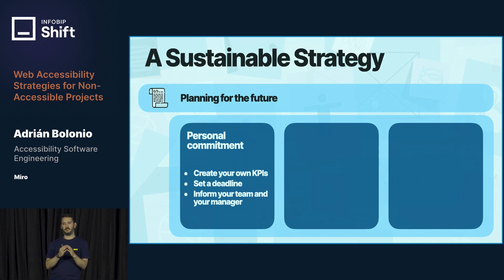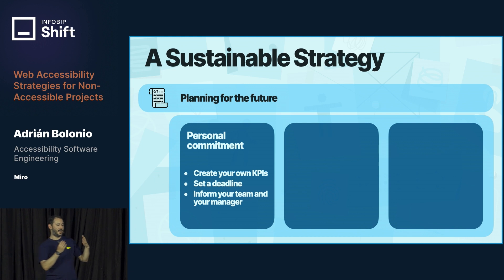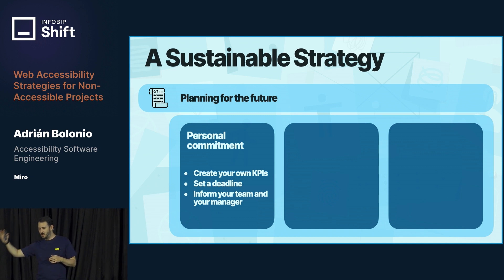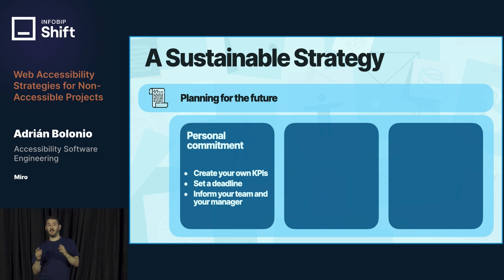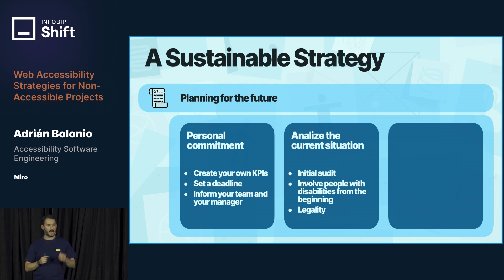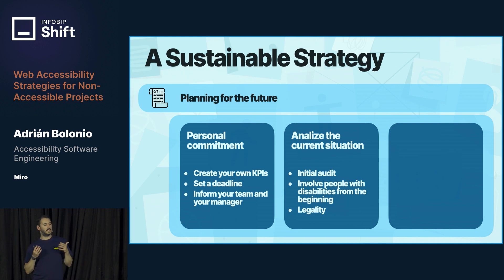Planning for the future starts with personal commitment. You want to be the accessibility expert of your project, so make a personal commitment. Create your own KPIs and set deadlines: by the end of the quarter, I will be able to fix easy accessibility issues; I want to finish this course. And importantly, be transparent — inform your team and your manager that you want to take the lead in accessibility. Also analyze where you are now. The current situation can start with an initial audit — it doesn't need to be external. Consider and involve people with disabilities from the beginning.